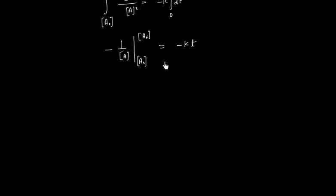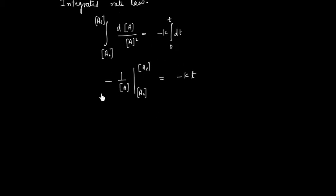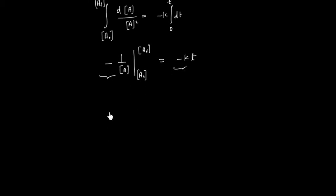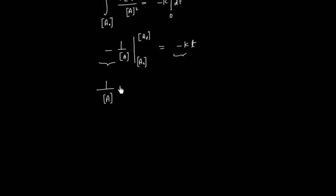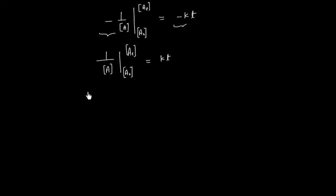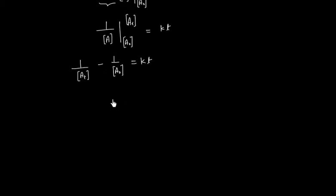Plugging in the limits, the two minus signs cancel. So we have 1 over A evaluated from A₀ to Aₜ, which gives 1 over Aₜ minus 1 over A₀, equal to k times T. Rearranging, we get 1 over Aₜ equals k·T plus 1 over A₀. This is the integrated rate law for the second order reaction.